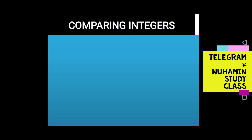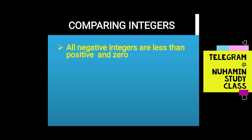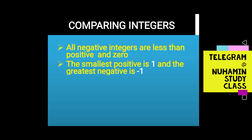Comparing integers: all negative integers are less than positive integers. The smallest positive integer is one, and the greatest negative integer is negative one.